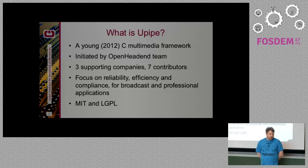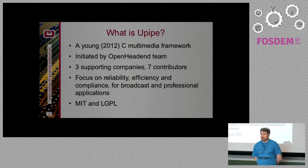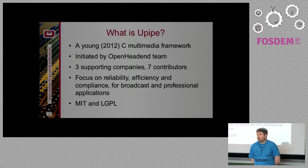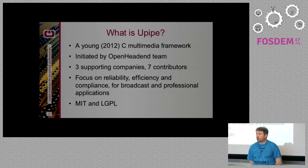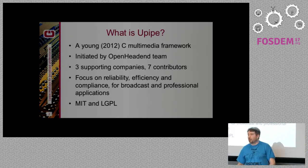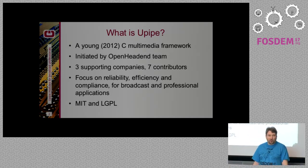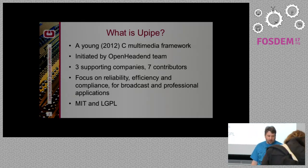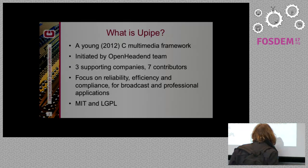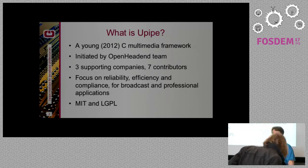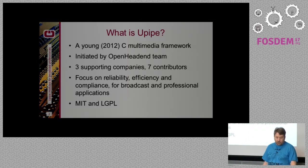The license of U-Pipe is MIT and LGPL — not both simultaneously. Some modules are MIT: the core, the headers, the main pipes — that's what you need to build a pipeline, including duplication, sources, file source, file sink, UDP, and so on. We have some modules that are LGPL, mainly the code that deals with codec formats — what we call the framers — and some support libraries like libavcodec, where the binding code is also LGPL.